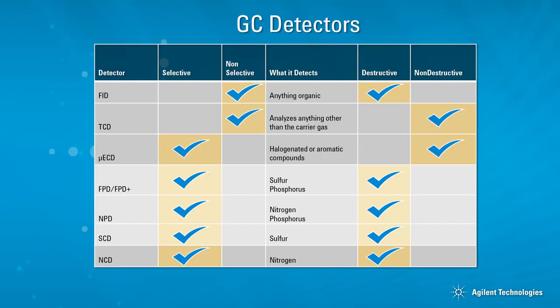Each type of detector responds differently to compounds. Non-selective detectors will detect anything. The FID detector, for example, will detect anything organic. Selective detectors are designed to detect only specific compounds for analysis. The NPD detector, on the other hand, will detect nitrogen phosphorus only. Selectivity is the response of one group of compounds in a detector relative to the response of another group of compounds in the same detector.